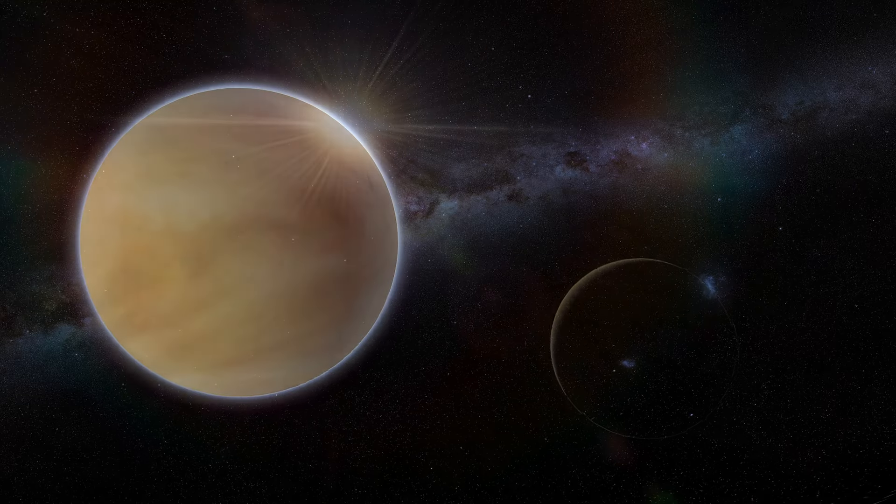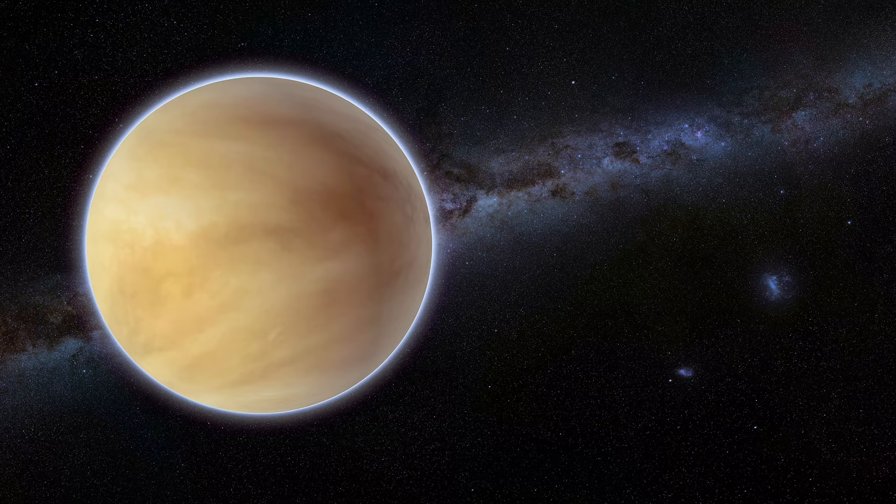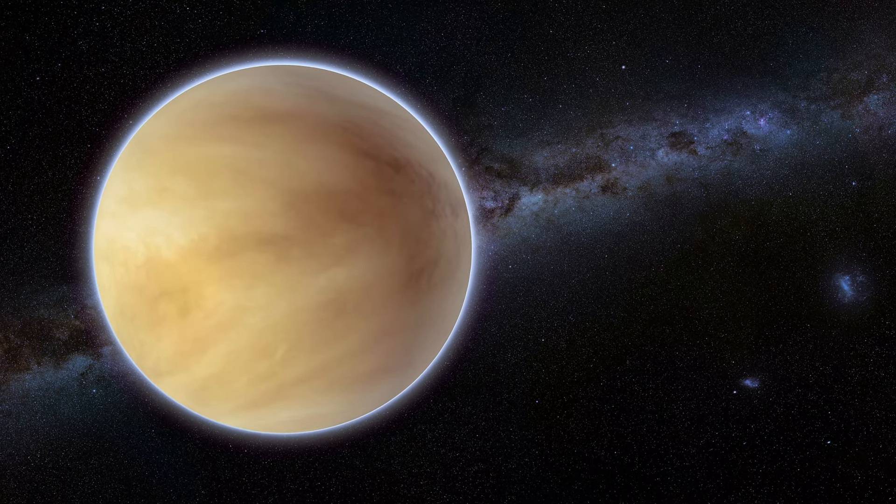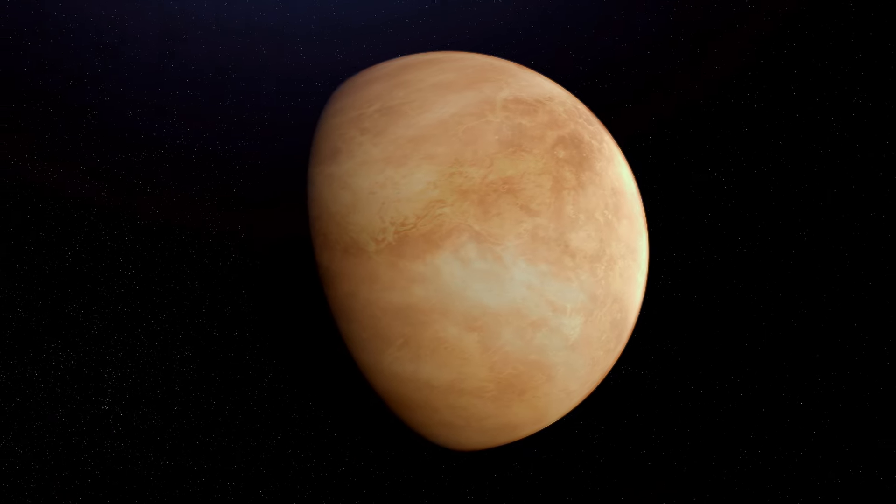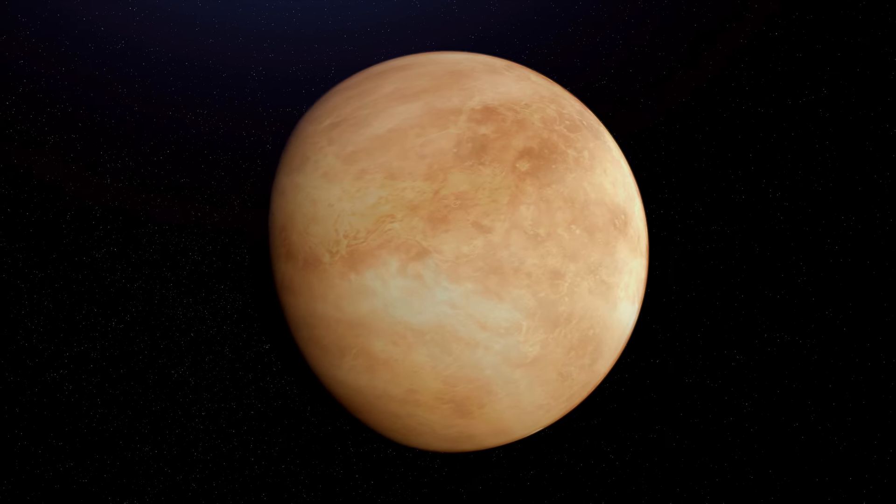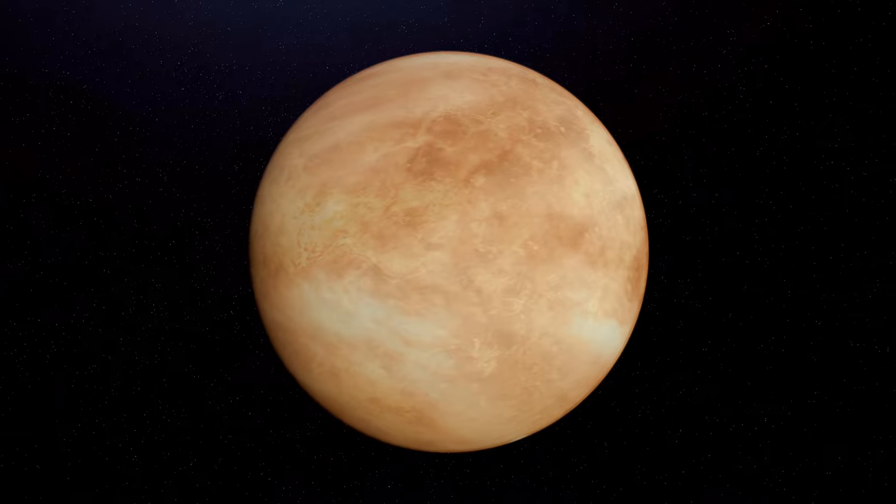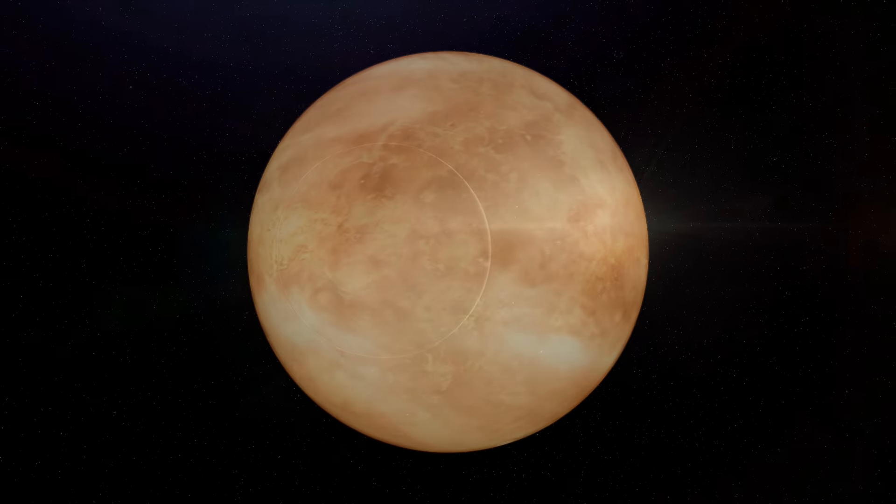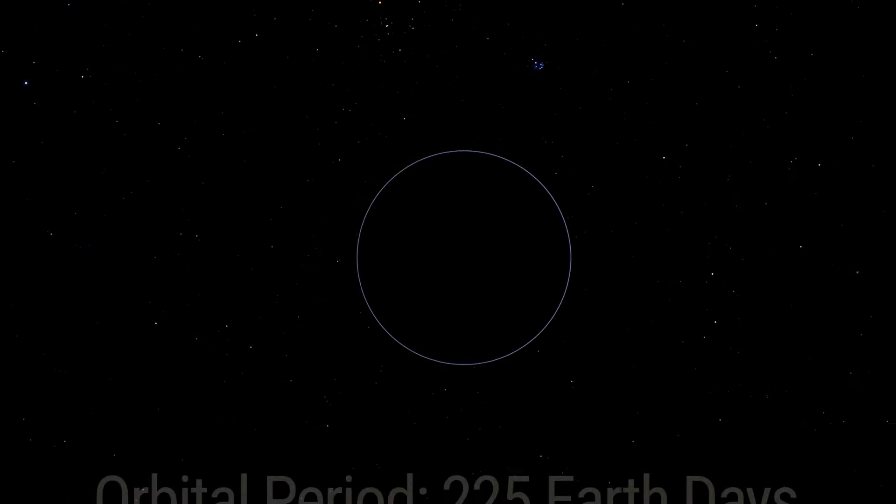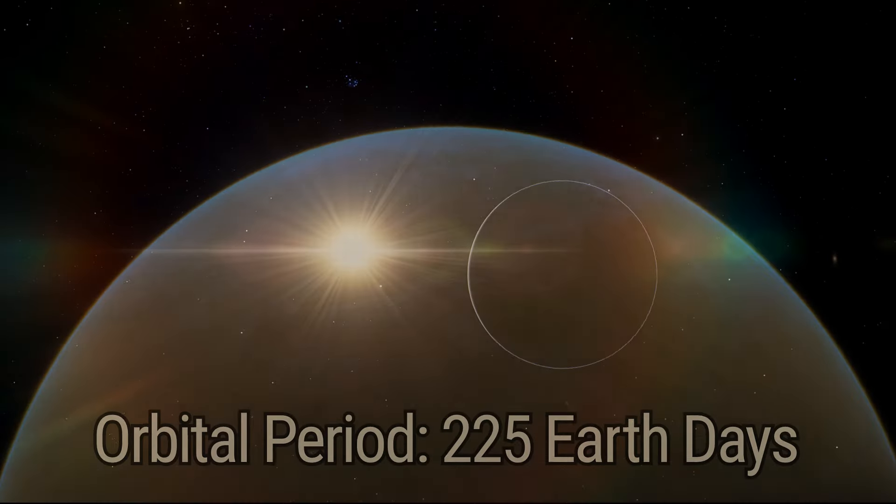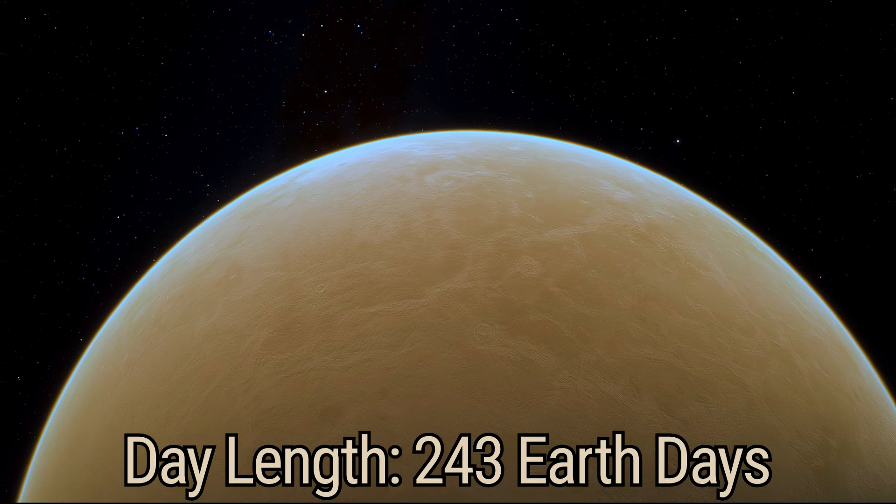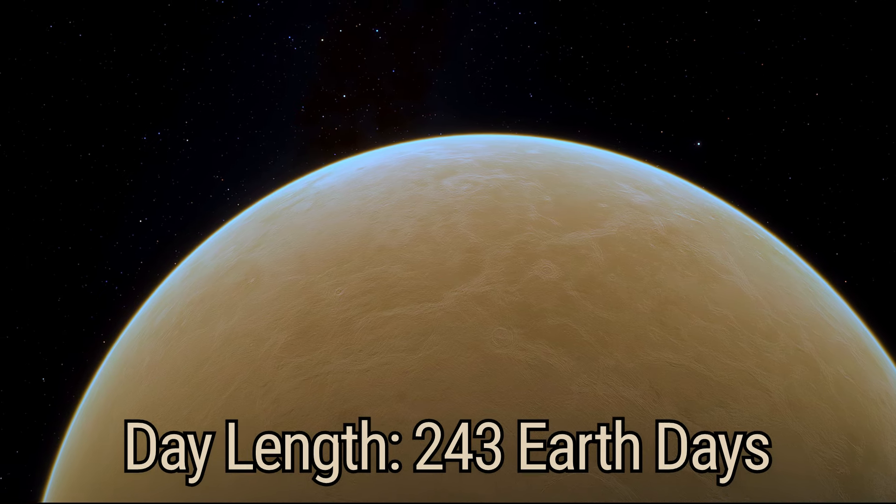Venus is enshrouded in a thick, toxic atmosphere, a stark contrast to its neighbor. Venus spins slowly in the opposite direction to most planets, with its sun rising in the west and setting in the east. Its year lasts 225 Earth days, while a single day surpasses its year, taking 243 Earth days to complete a single rotation.